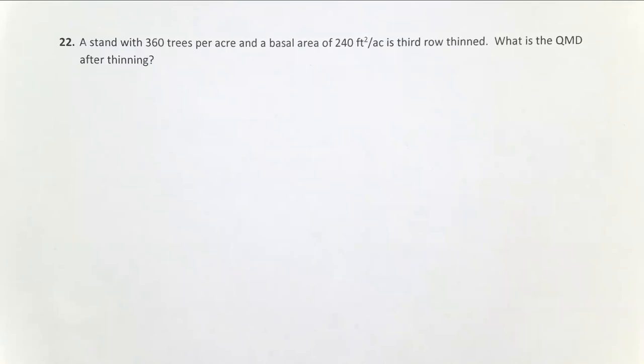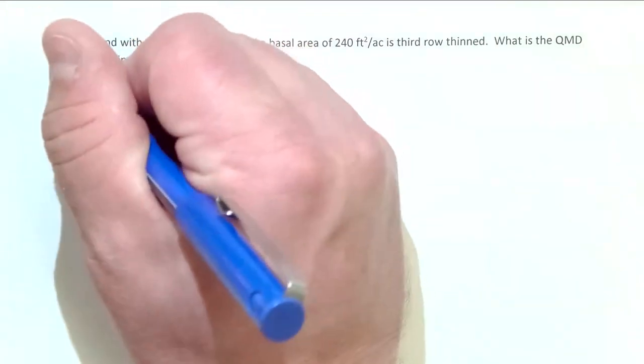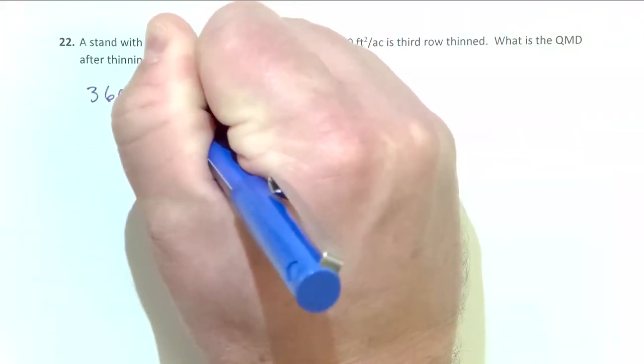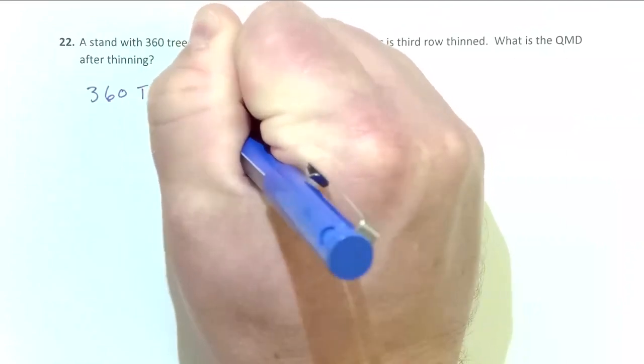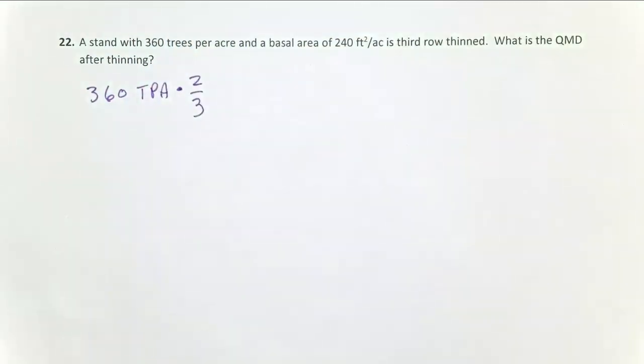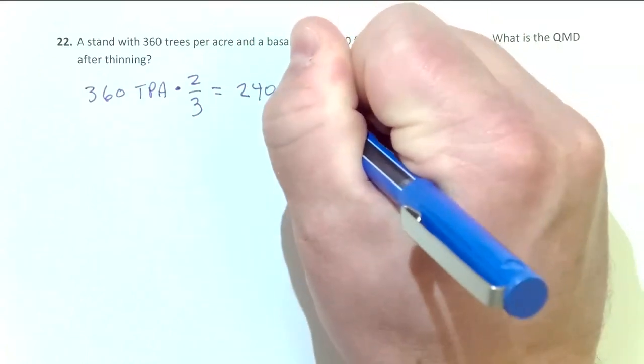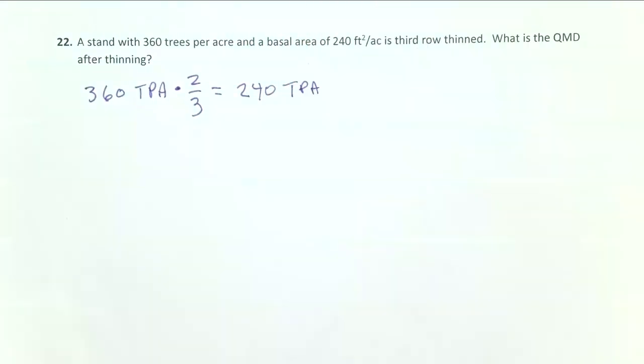And so if I'm going to take out a third of my stand in a third row thin, what I could do is I could multiply 360 trees per acre by two-thirds, because I'm leaving two-thirds of the rows up. I'm taking one down, and that would tell me I need 240 trees per acre, or I'm going to have 240 trees per acre after that thin.